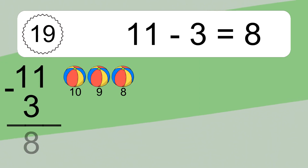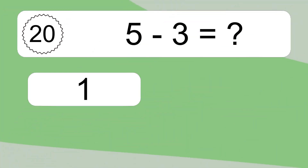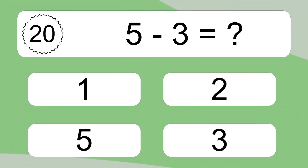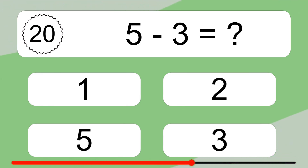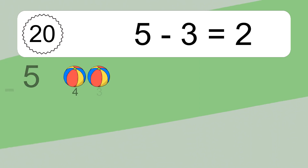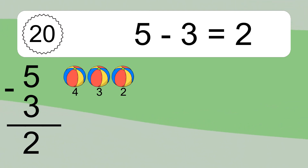11 minus 3 equals 8. Let's count it. 10, 9, 8. 5 minus 3 equals what? 5 minus 3 equals 2. Let's count it. 4, 3, 2.